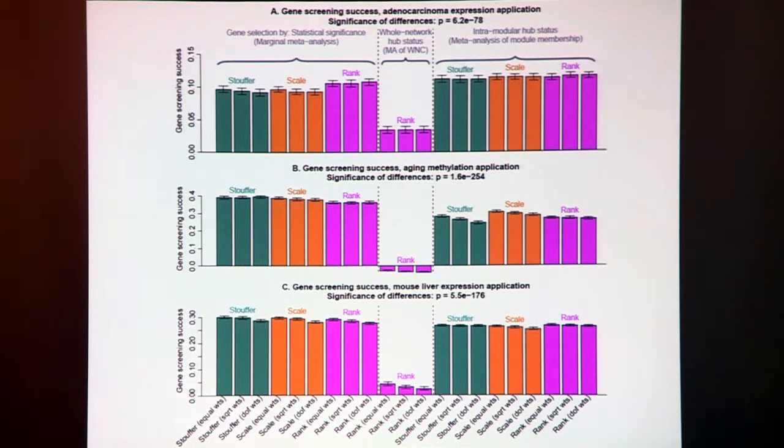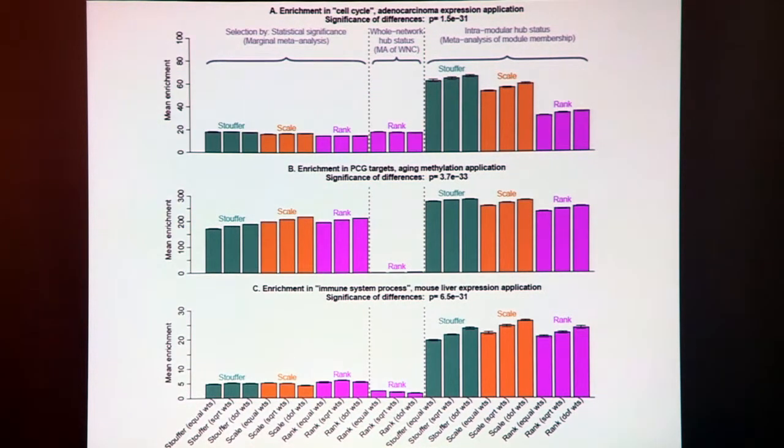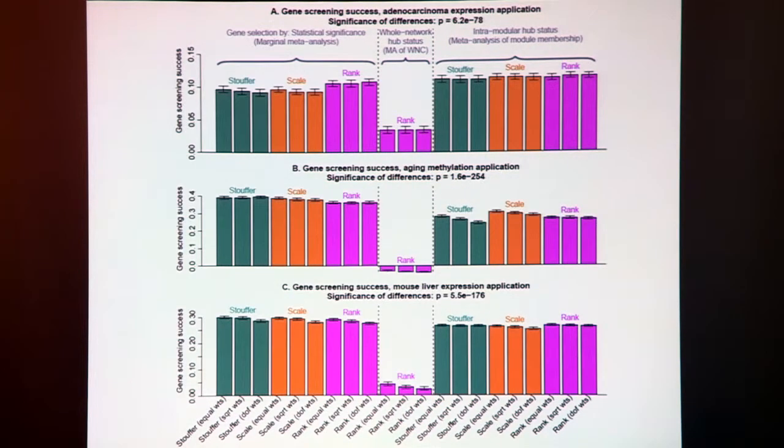Contrast these figures. If you want to learn that aging relates to hypermethylation of Polycomb group target genes, that's a biologically very interesting finding. Then you take the module-based analysis. However, if you wanted to find a blood-based biomarker of chronologic age, then you are probably better off just using a standard meta-analysis.